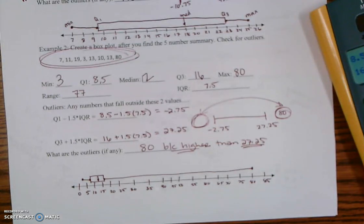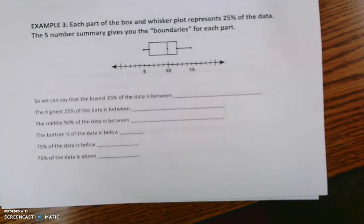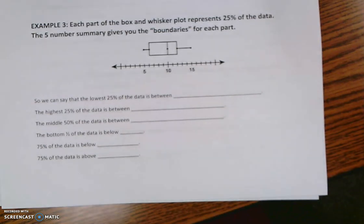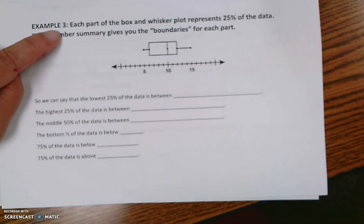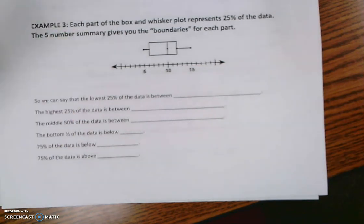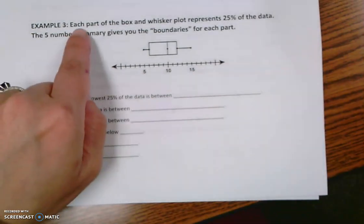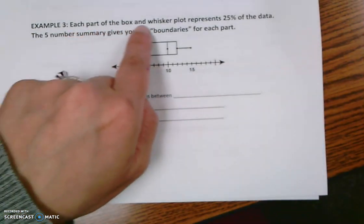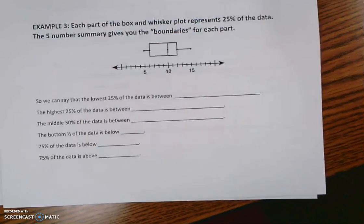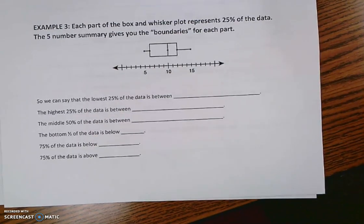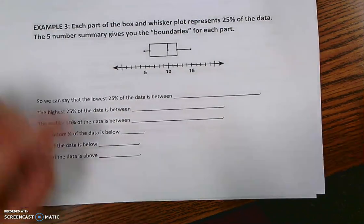I'm going to flip to the next page. The last example I'll do is example three — you're going to get practice with a box and whisker plot. Before you do, I want to tell you that each part of the box and whisker plot represents 25% of the data. The five number summary gives the boundaries for those sections.